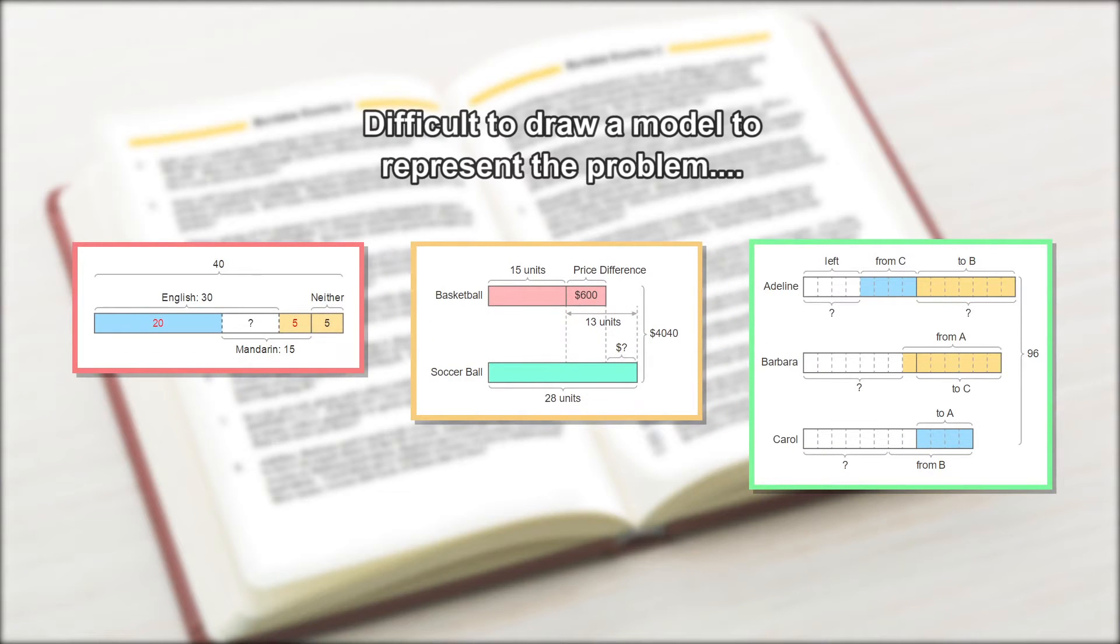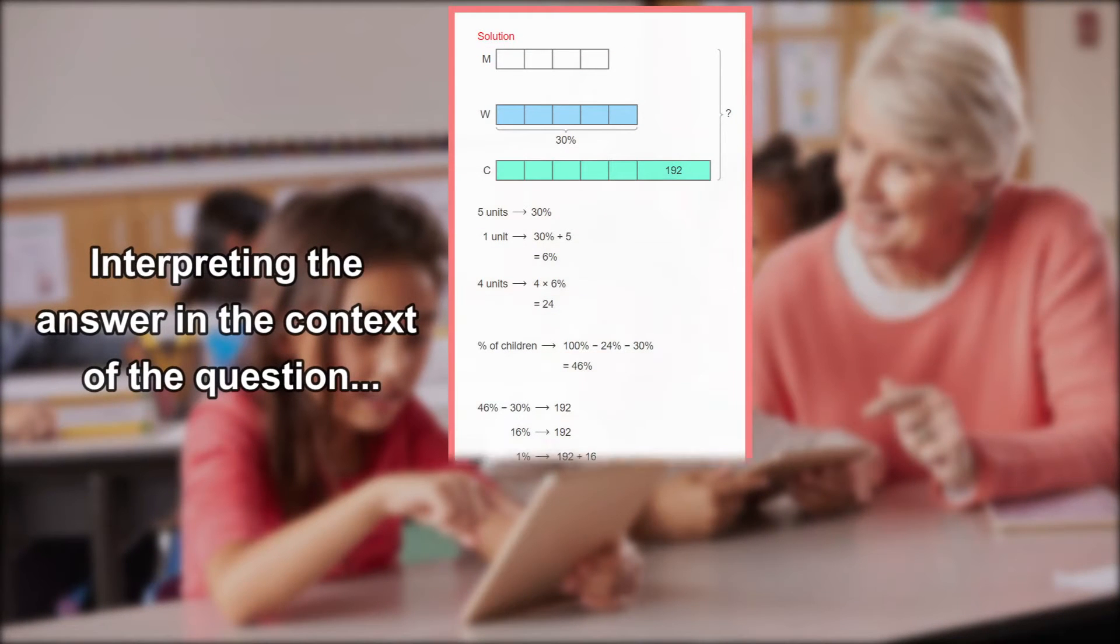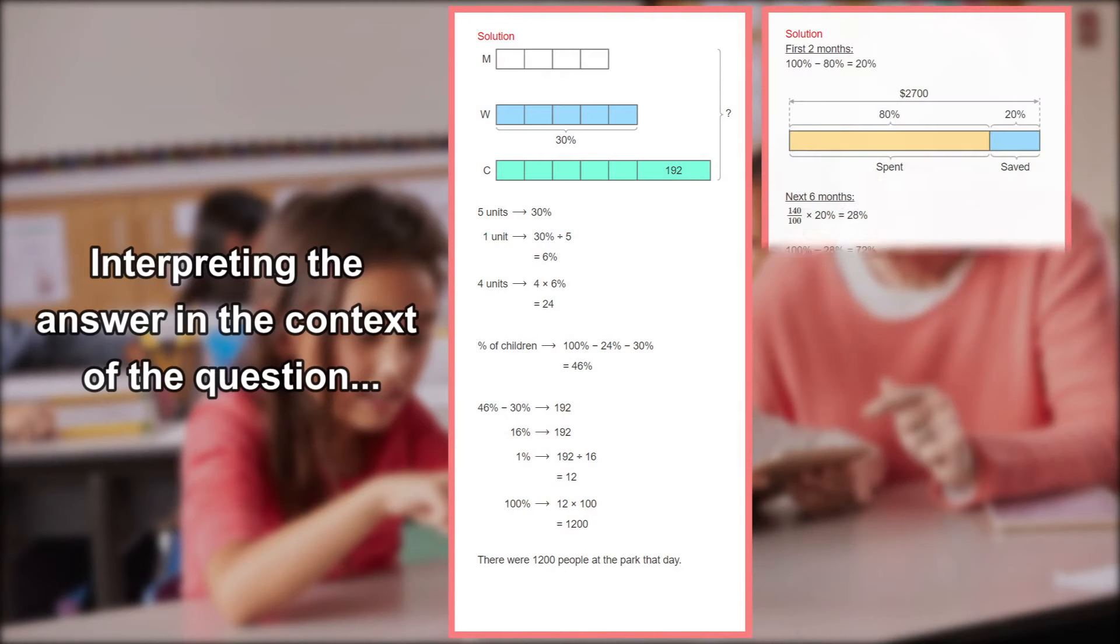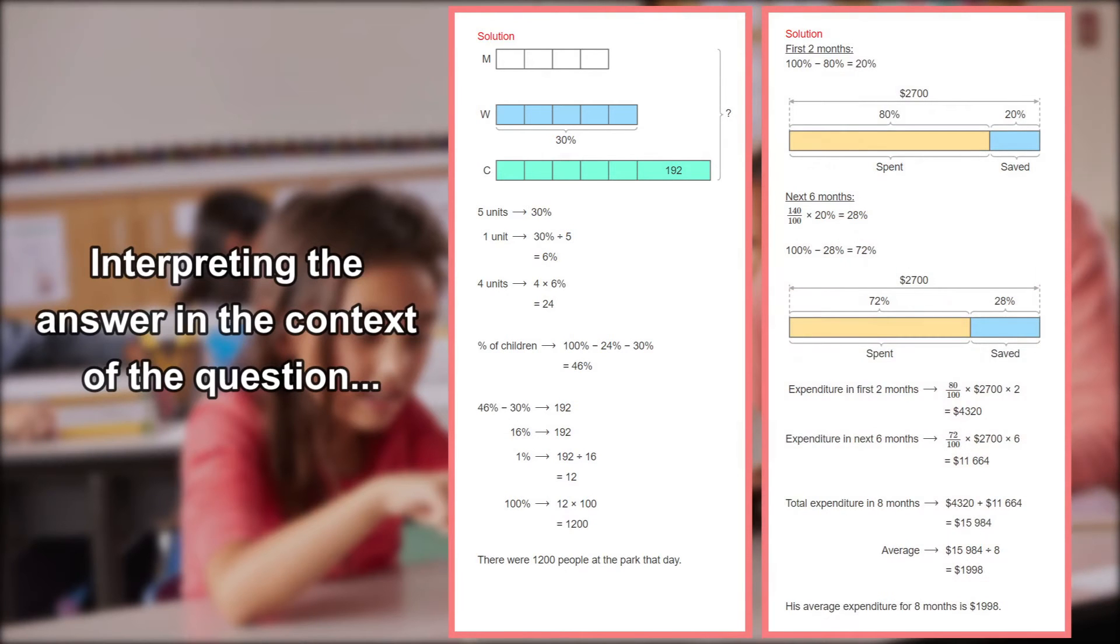How do we draw the models to accurately represent the context of the question? How should we begin to write the number sentence? Does the answer satisfy what the question asks for?